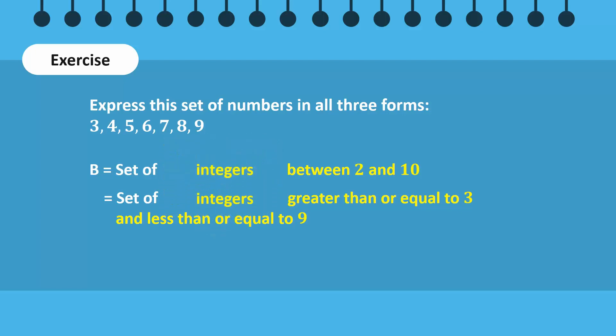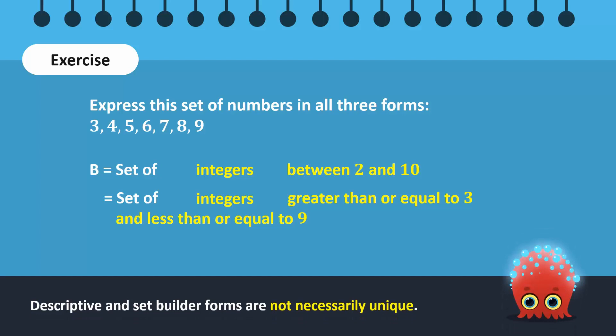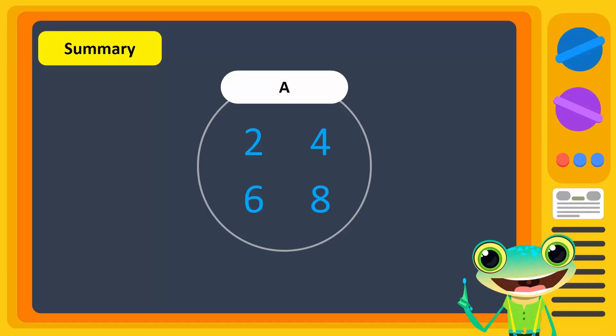This example tells us that the descriptive and set builder notations are not necessarily unique. To summarize, sets can be expressed in three different ways. In the descriptive form, a set is defined in a sentence that indicates the elements belonging to the set. The tabular or roster form lists all the distinct elements of a set in braces. The set builder notation expresses a set with an alphabet showing all the properties of elements of the set.